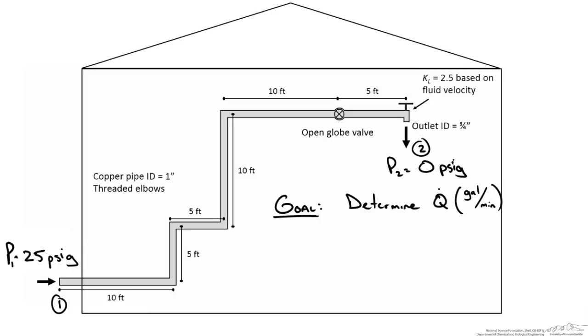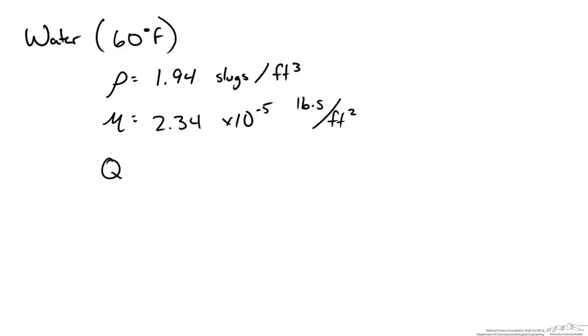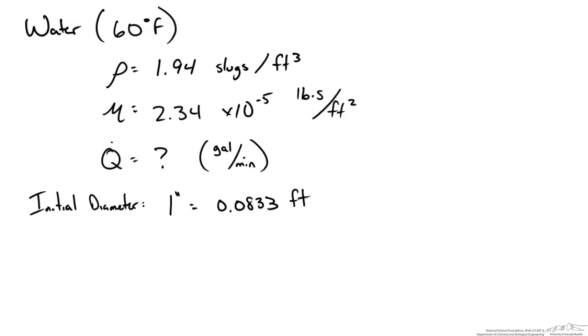So the first thing I like to do is convert all the values to the same unit system and collect any information we may need to help us along the way like the properties of the fluid. So we have water coming into our system and doing a quick google search for city water lines, we are going to assume this is about 60 degrees Fahrenheit. So we are going to want the density of the water as well as the viscosity of the water to do our calculations. And I am going to work in English units since we are starting with the pressure in psi. We are looking for Q, this is the one thing we want, and we want it in gallons per minute.